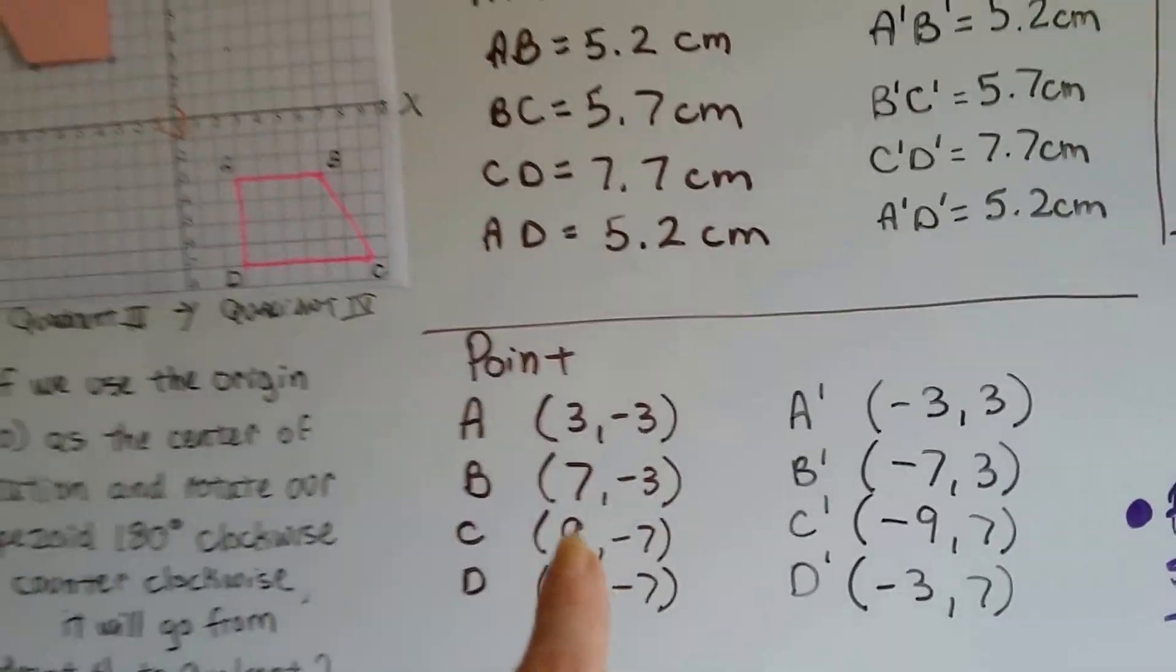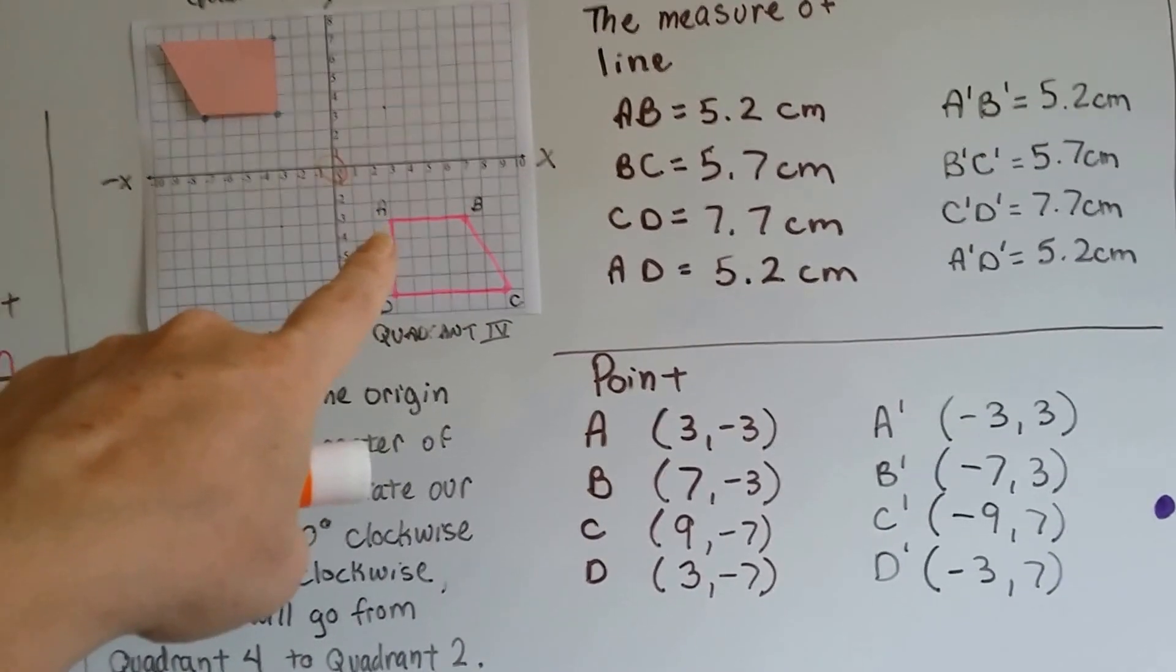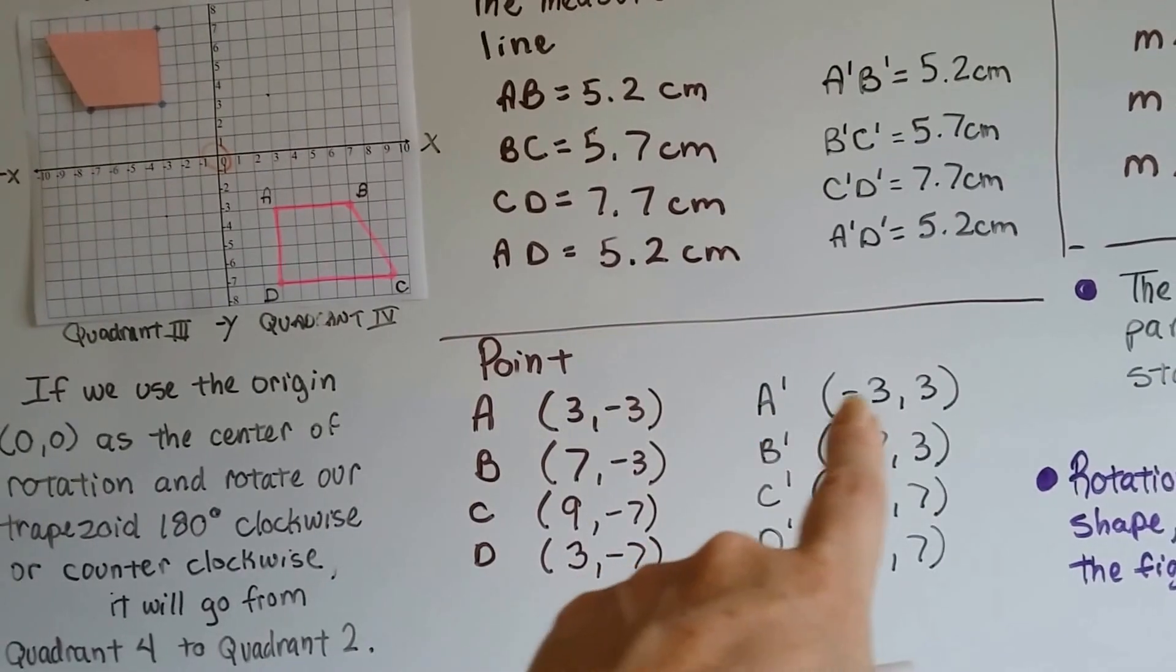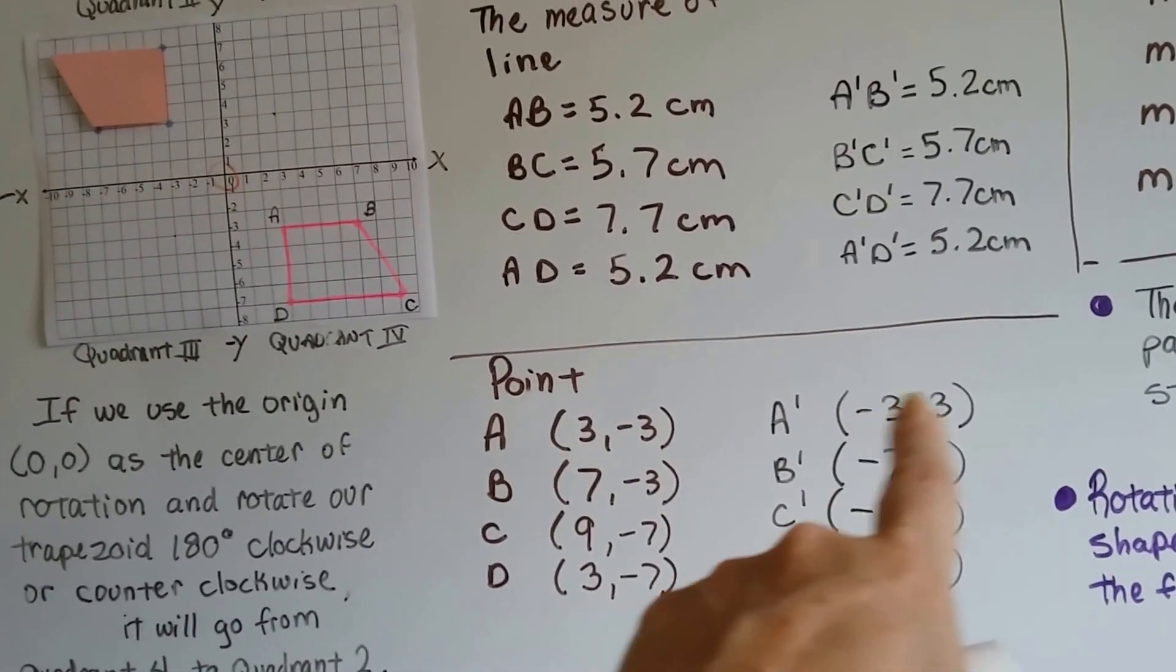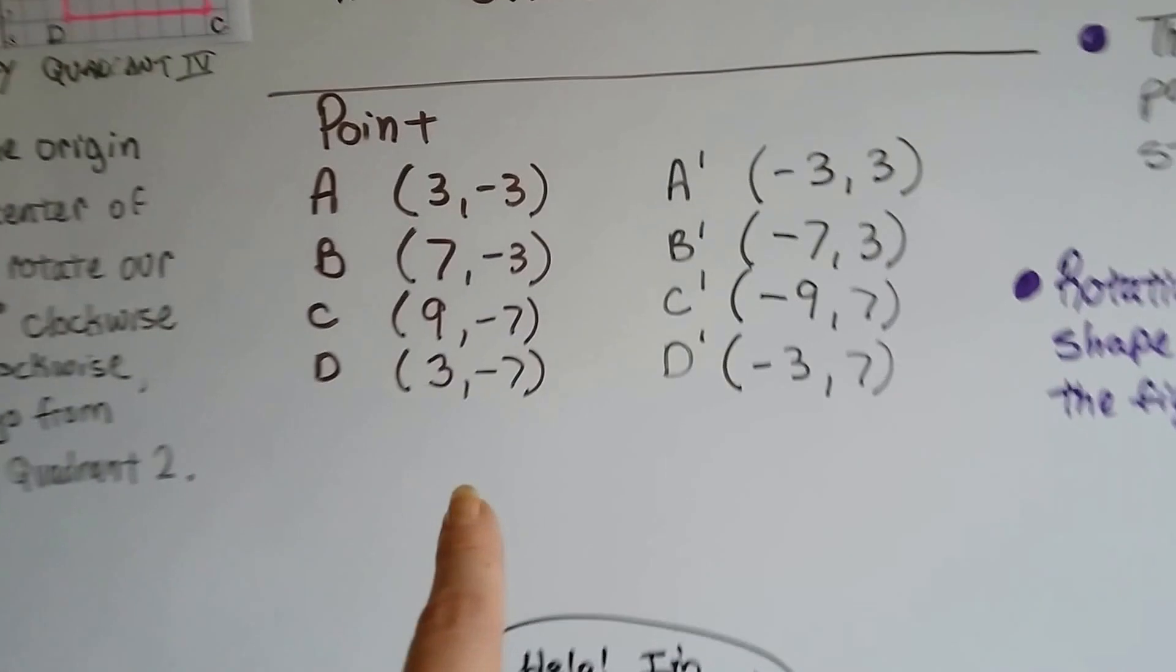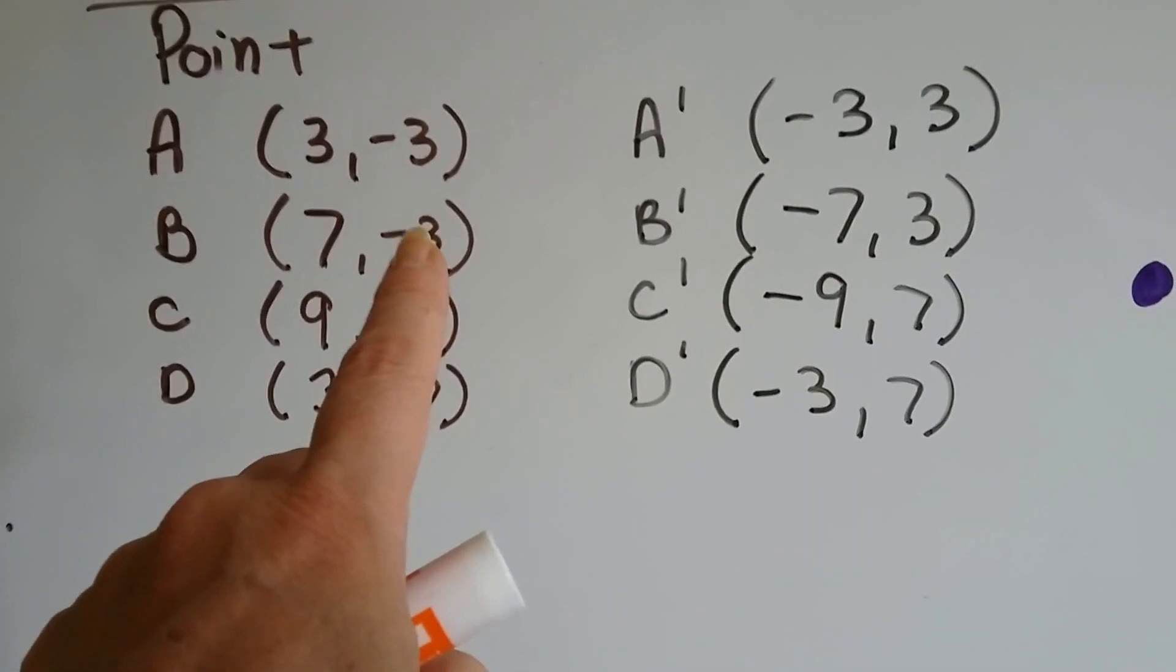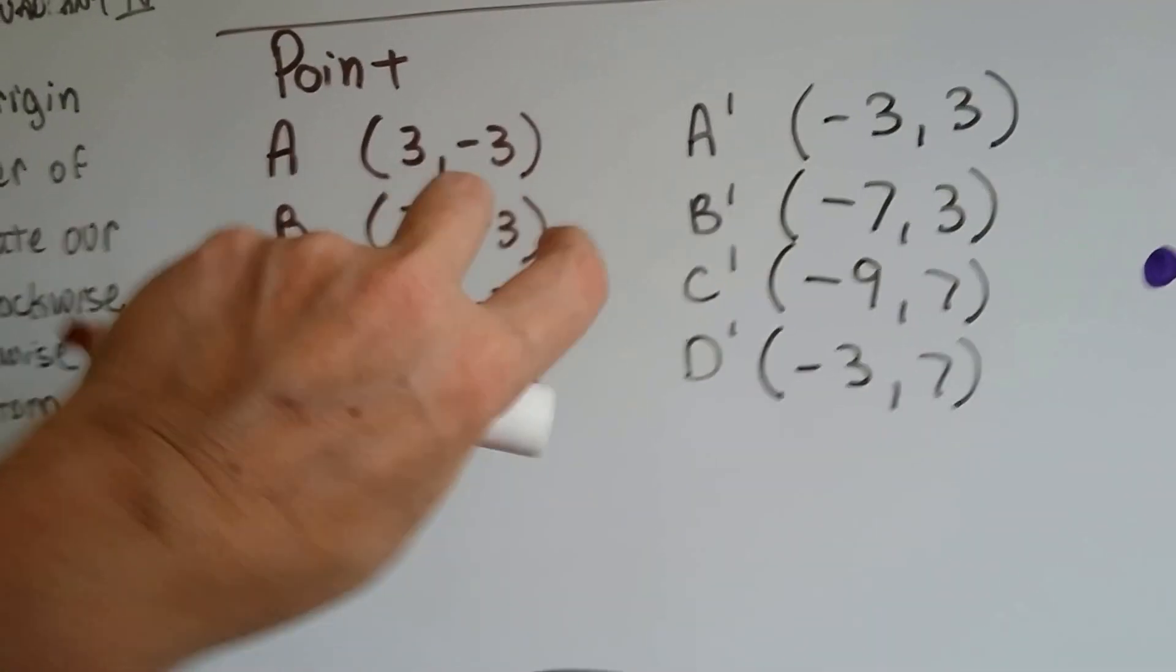And if we look at the points of where they're located, A is located at (3, -3). It's 3 on the X and negative 3 on the Y. And look where A prime is - it's like the opposite. It's (-3, 3), because it flipped over to here. This went from a positive 7, negative 3 to a negative 7, positive 3, because it flipped and flipped.